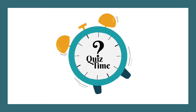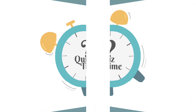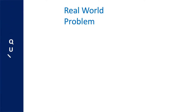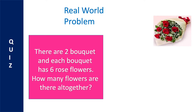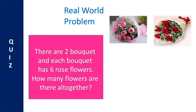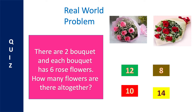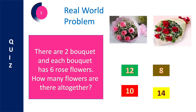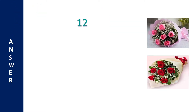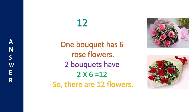Are you ready for a quiz? Let's start! The first question is: There are 2 bouquets. Each bouquet has 6 rose flowers. How many flowers are there altogether? The options are 10, 14, 12, and 8. The correct answer is 12. One bouquet has 6 rose flowers, so 2 bouquets have 2 × 6 = 12. So there are 12 flowers.